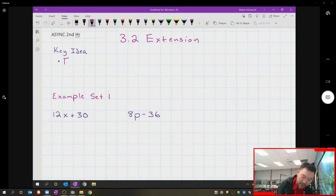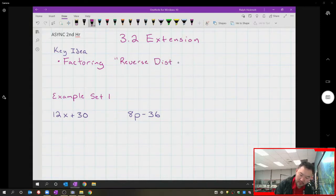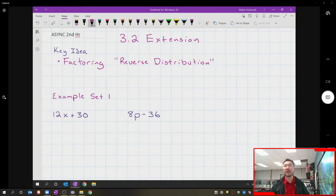Basically, 3.2 extension is all about factoring. Key idea: factoring - think of factoring as reverse distribution. We've done the distribution property fairly continuously the last few sections, but we're going to undo it now. Factoring is the inverse operation of distribution property.